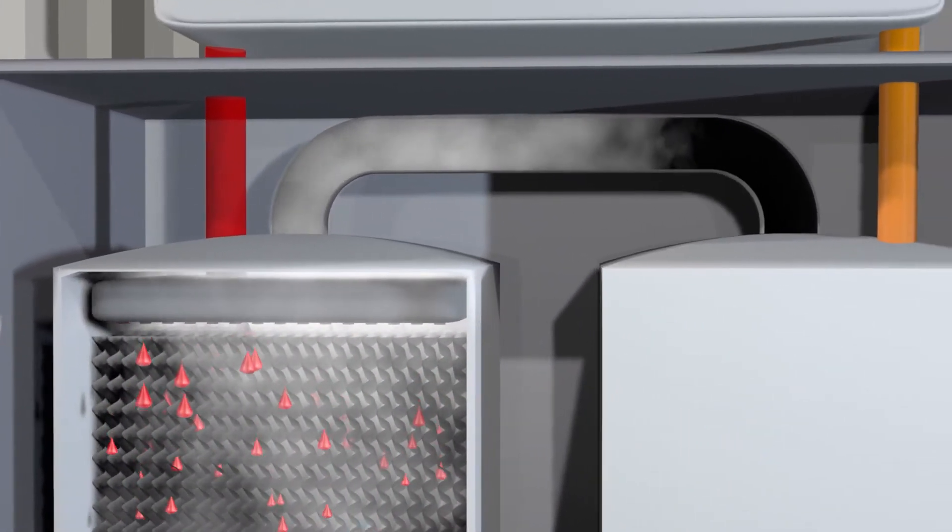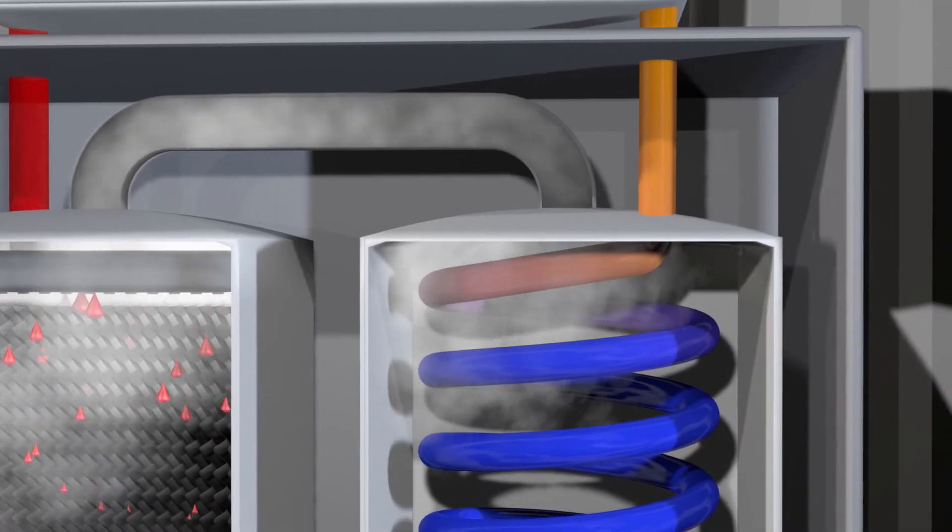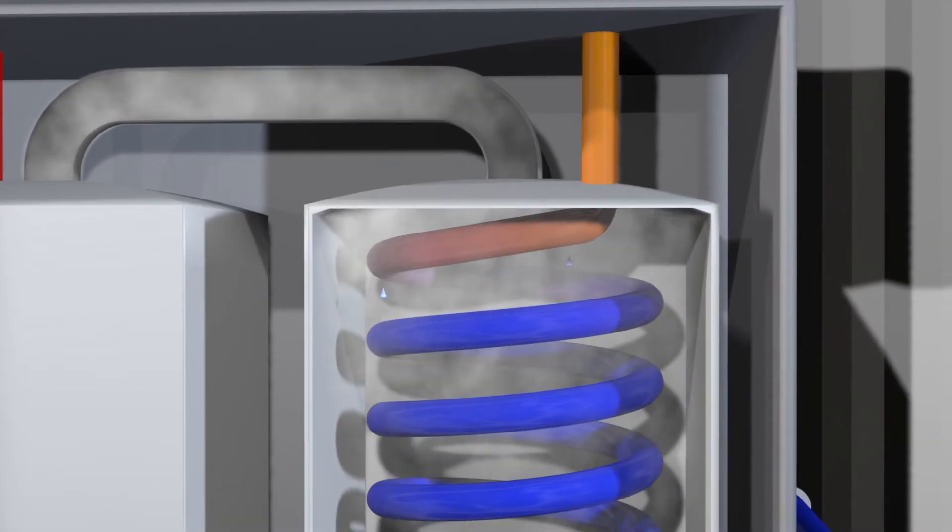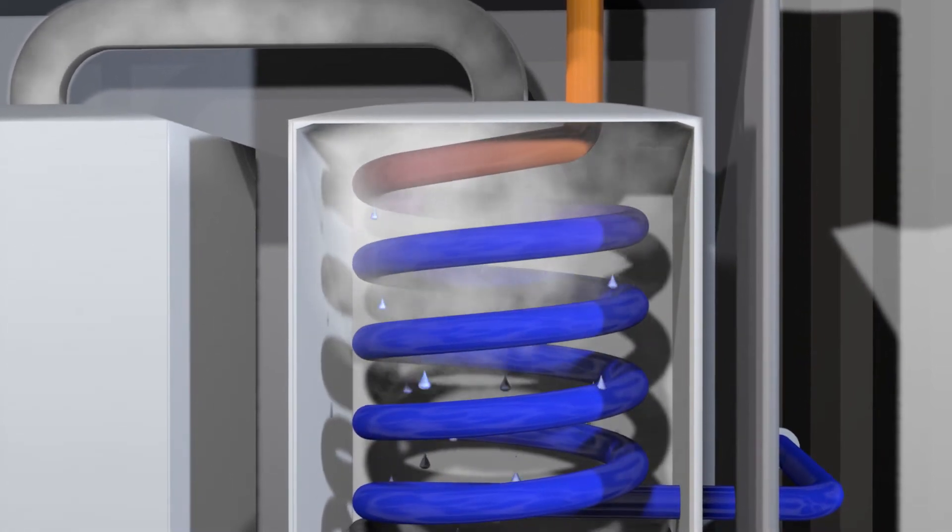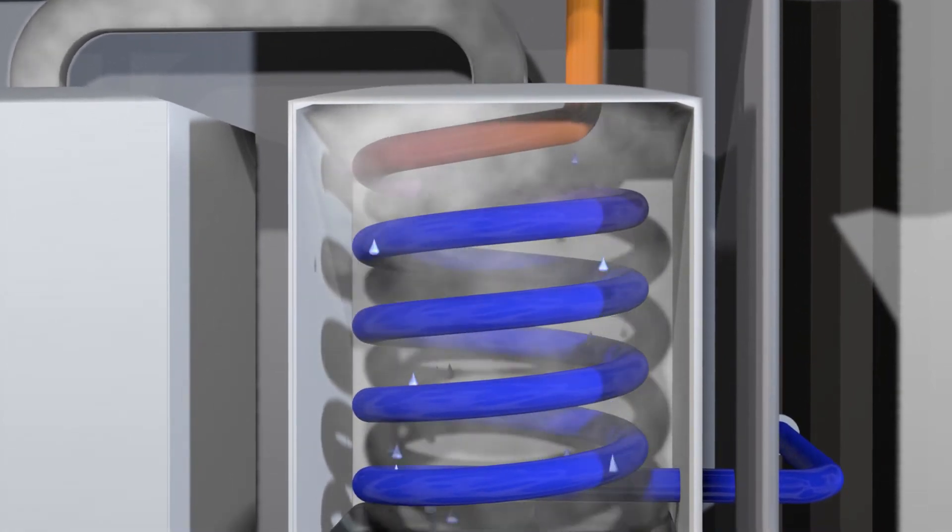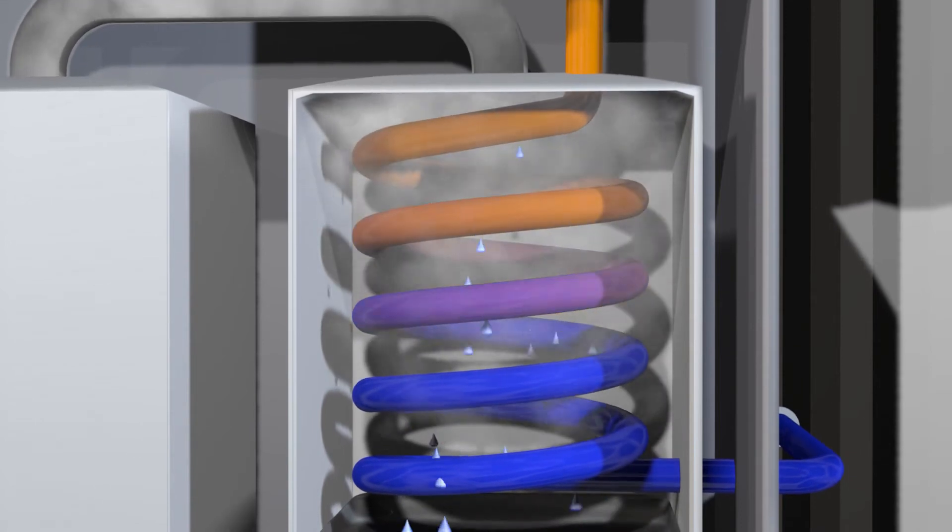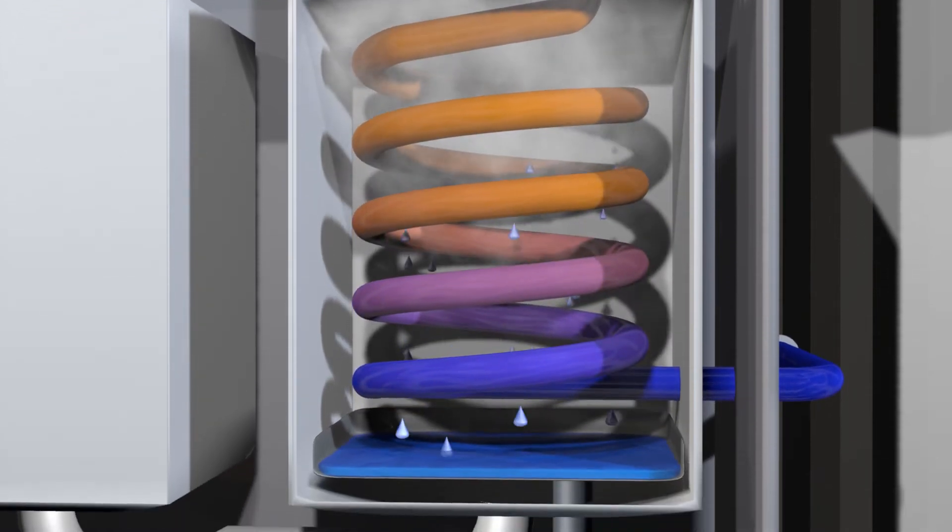The water-saturated air flows into the condenser. Here it cools at the tubes filled with cooler raw water. Water condenses. At the same time, the condensation heat is used to preheat the untreated water in the tubes. This increases the efficiency of the system.